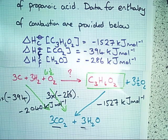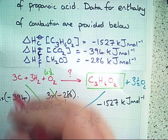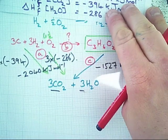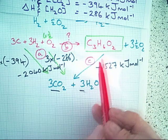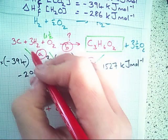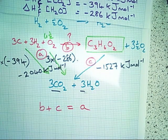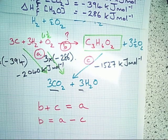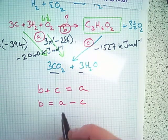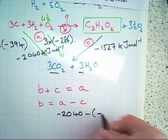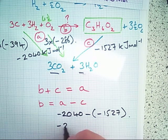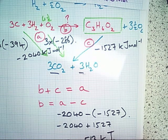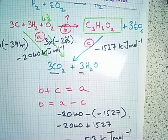For simplicity, I'm going to label each of the arrows as A, B, and C. Hess's law states that the total enthalpy change is independent of the direction taken, meaning the total enthalpy values for all arrows in the clockwise direction — B plus C — equals the enthalpy values in the anti-clockwise direction. We're trying to find B, so rearranging: A minus C gives us B. Putting in the numerical values: minus 2040 minus minus 1527, which becomes minus 2040 plus 1527, giving a total enthalpy change of minus 513 kilojoules per mole.